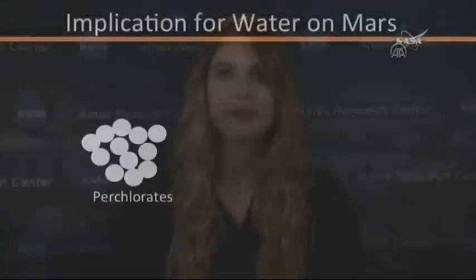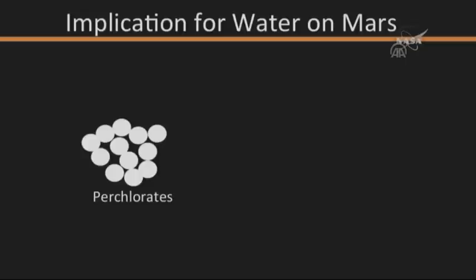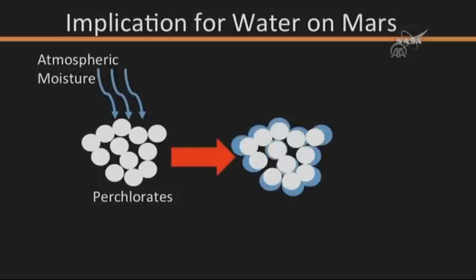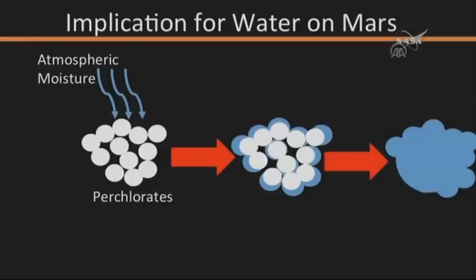Perchlorate salts have a special capability pertaining to the absorption of atmospheric water through a process called deliquescence. Basically, if the humidity in the Martian atmosphere gets high enough, perchlorate salts will absorb the atmospheric water until the salt dissolves and forms a liquid solution.